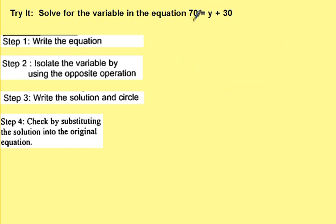Solve for the variable in the equation 70 equals y plus 30. Some people worry because it's on the opposite side, but no worries. The steps will be the same. 70 equals y plus 30. y is the variable. It's being added by 30. So the opposite is to subtract 30 on both sides.